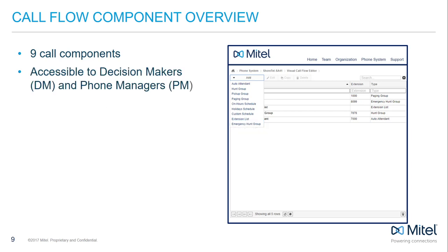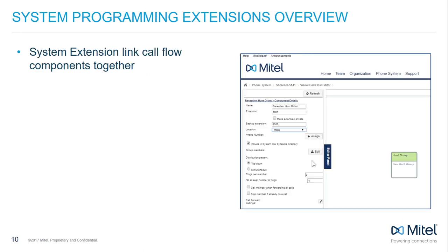Extension Lists are utilized by many of these Callflow Components. The Emergency Hunt Group defines how calls are going to be routed in the case of an emergency when emergency services needs to offer a return call. The Callflow Components in the Visual Callflow Editor are only accessible to decision makers and phone managers.